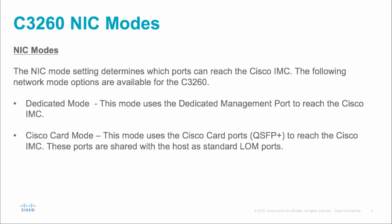Now I'm going to show you how to configure the C3260 management interfaces. This video assumes you have some basic knowledge of the server and have already taken care of plugging in power cables, plugging in the Cisco card ports, and plugging in the dedicated management port if that's the mode you wish to operate in. You also want to plug in a KVM dongle to the back of one of the server nodes — this provides your video, monitor, and keyboard connections, making configuration easy.